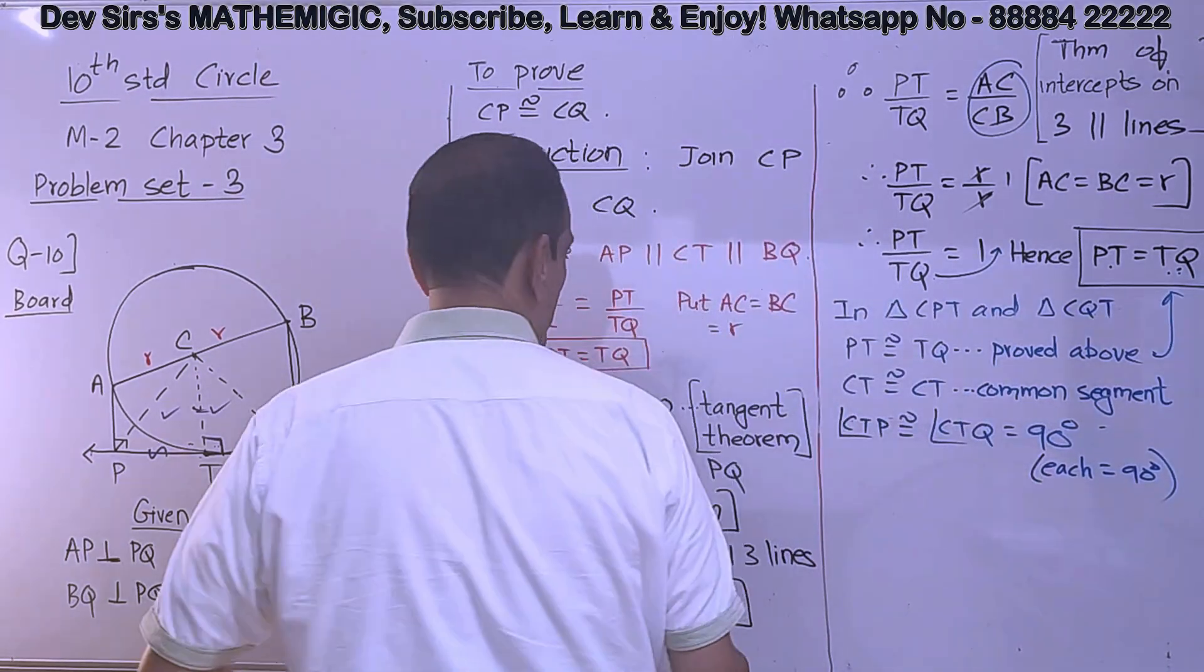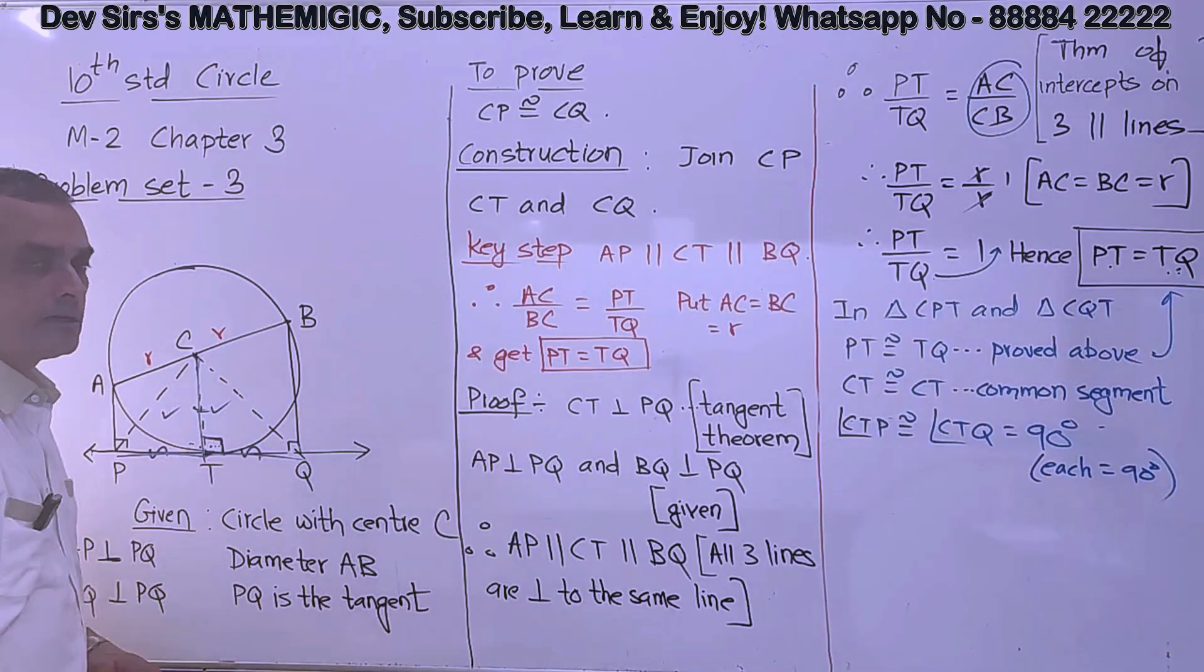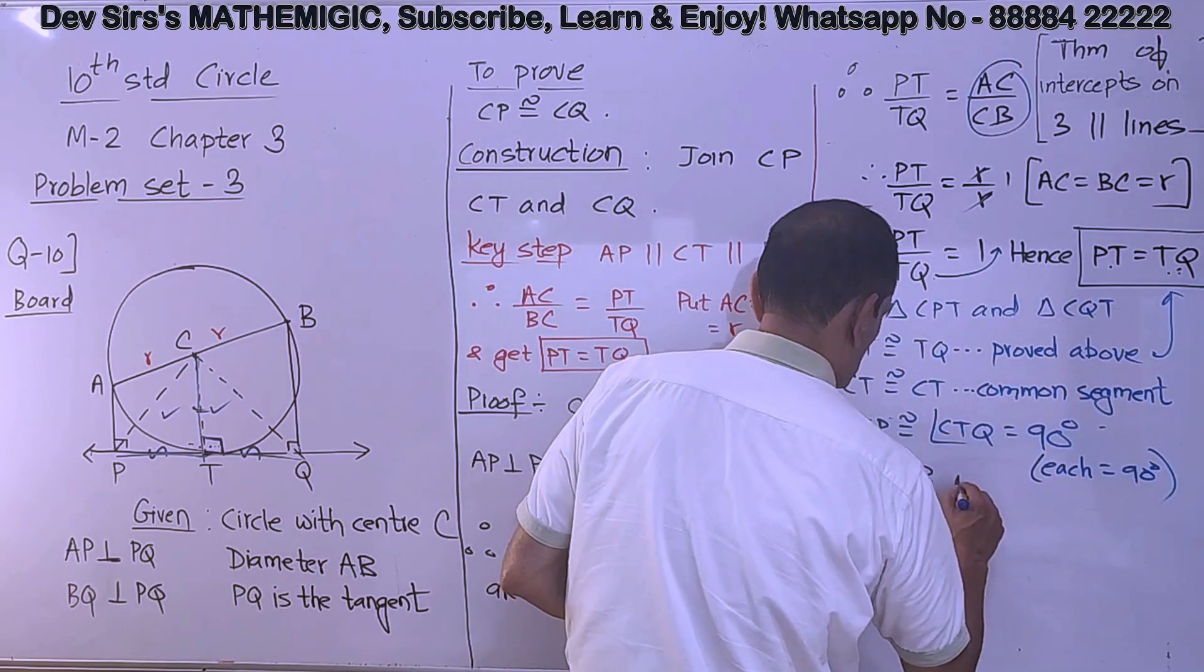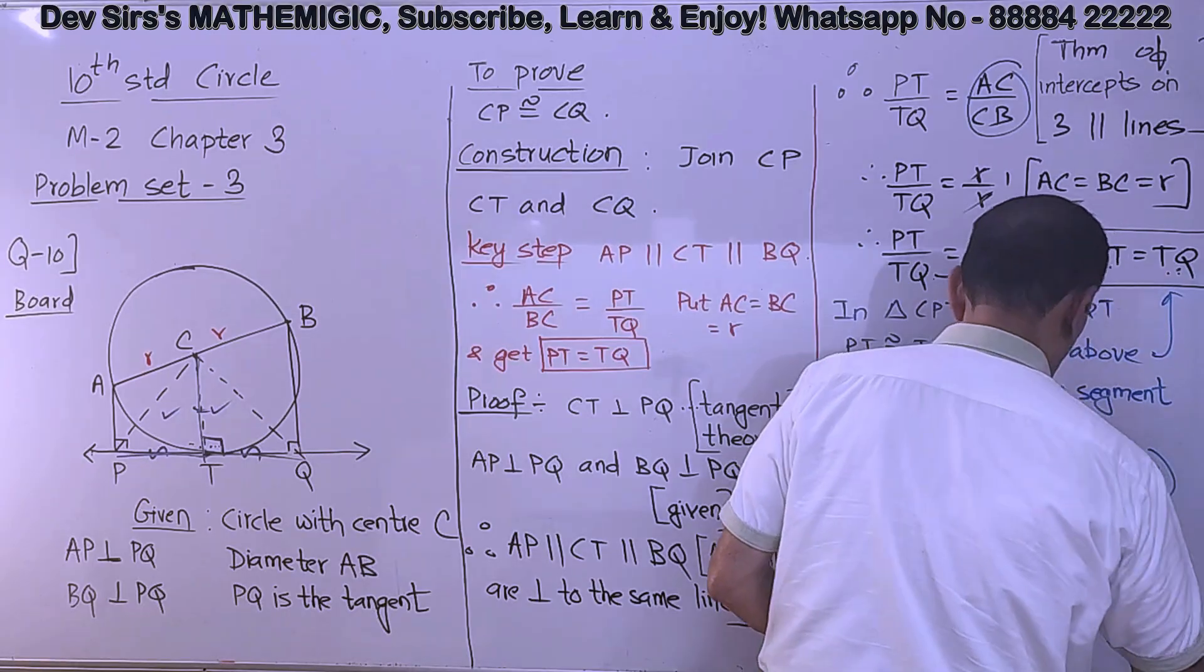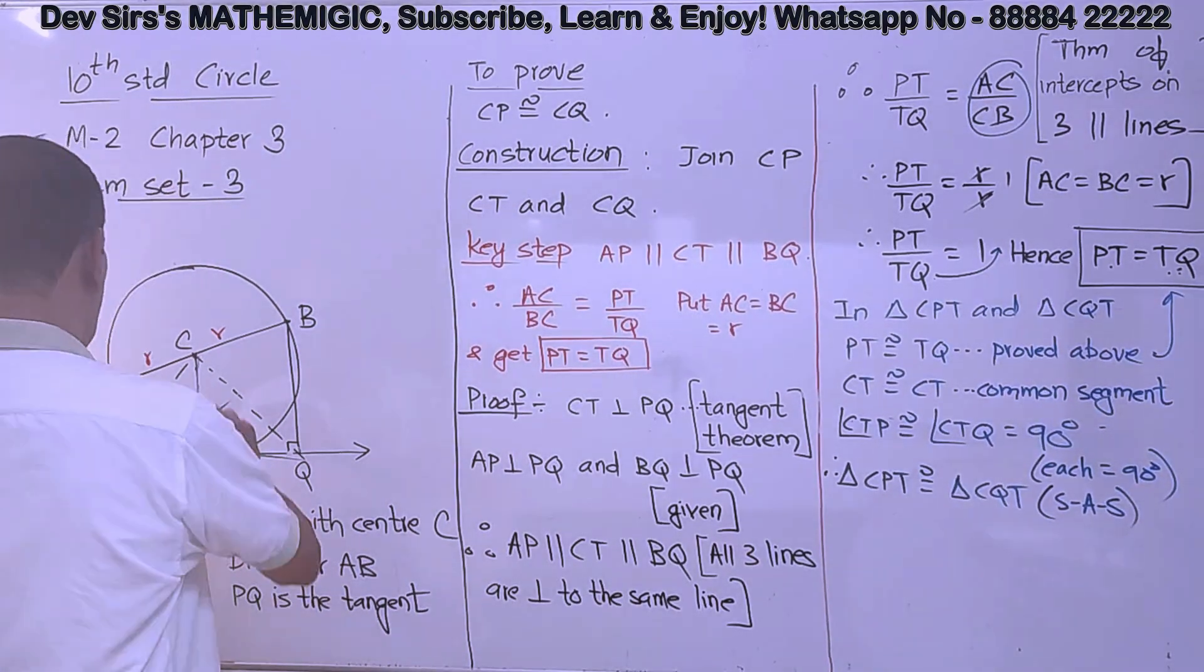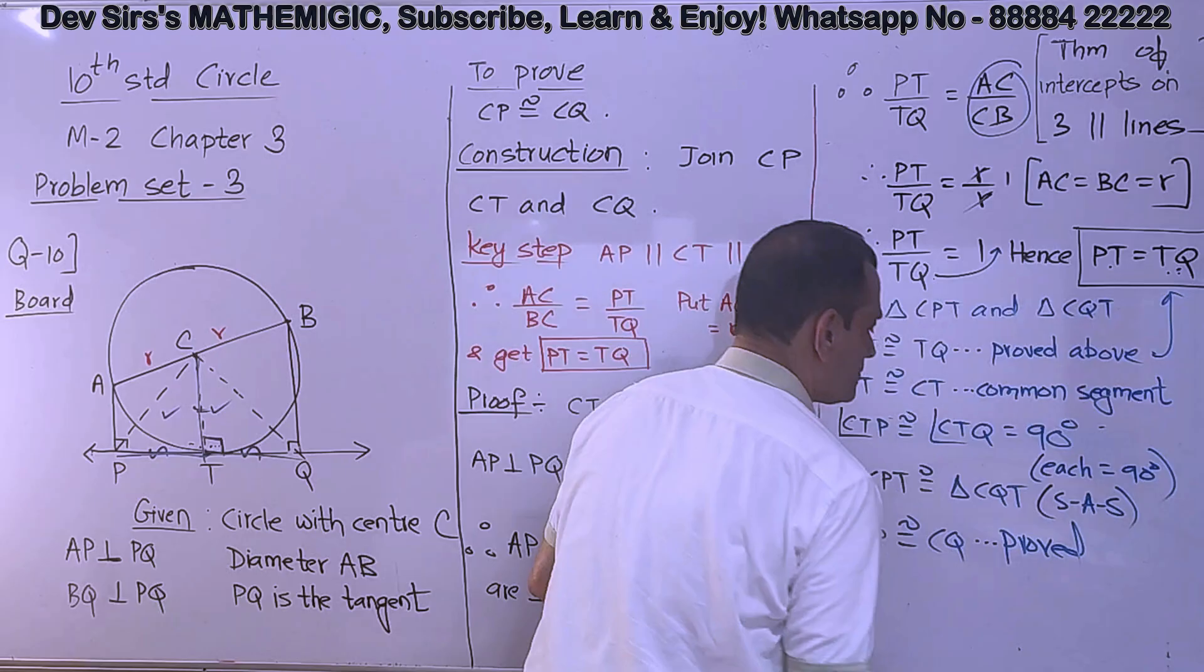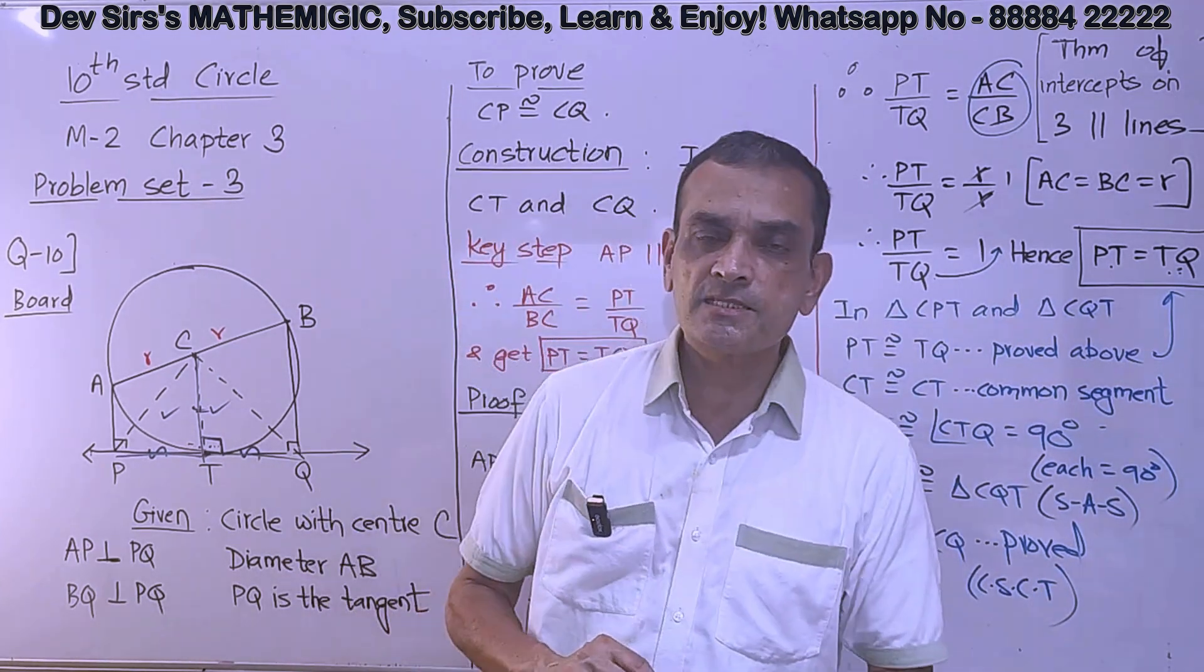Therefore, the two triangles are congruent by which test? See. Side angle side. Side angle side. Therefore triangle CPT congruent to triangle CQT. SAS test. Last step. Because the two triangles are congruent, what happens? CP congruent to CQ. Corresponding sides of congruent triangles. CSCT. Right?